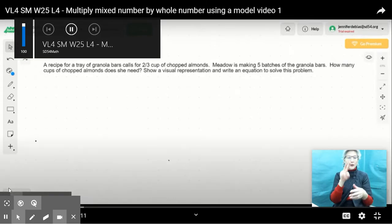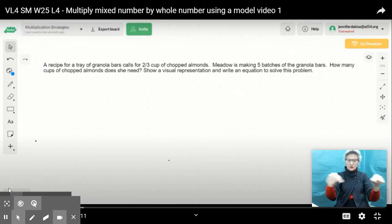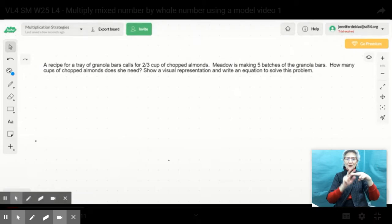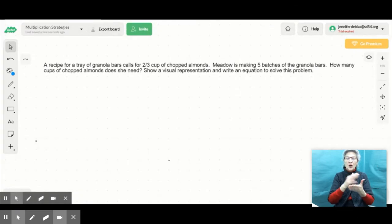It says a recipe for a tray of granola bars calls for 2/3 cup of chopped almonds. Meadow is making 5 batches of granola bars. How many cups of chopped almonds does she need? Show a visual representation and write an equation to solve this problem.